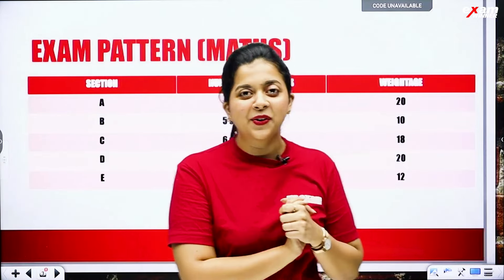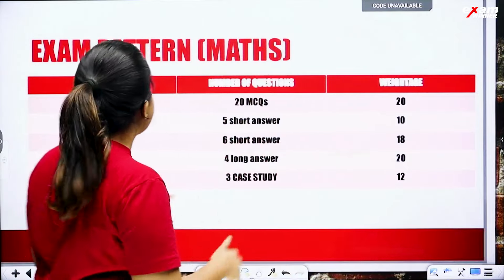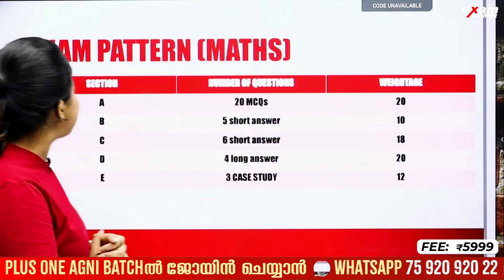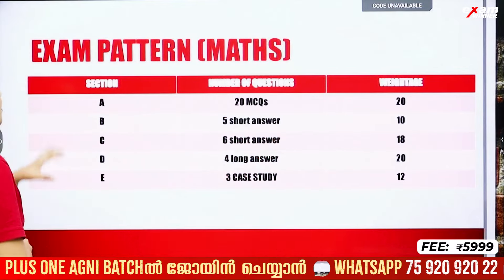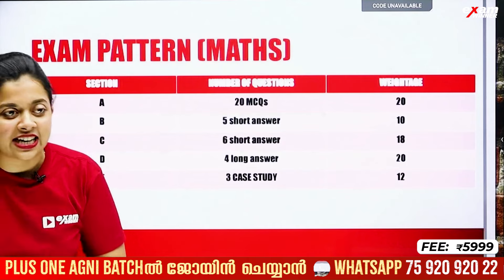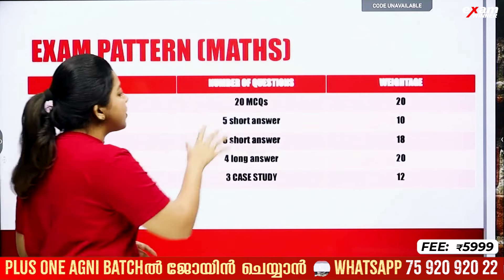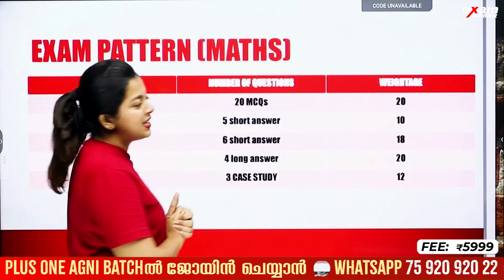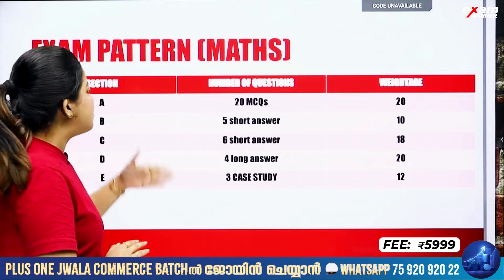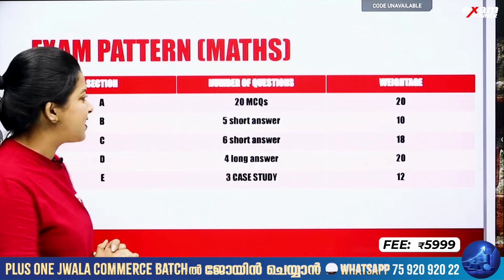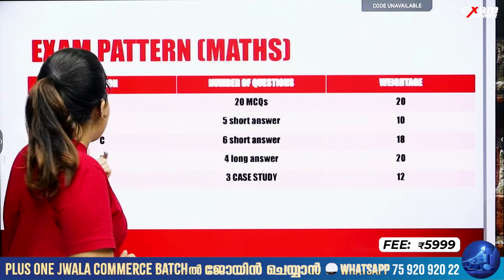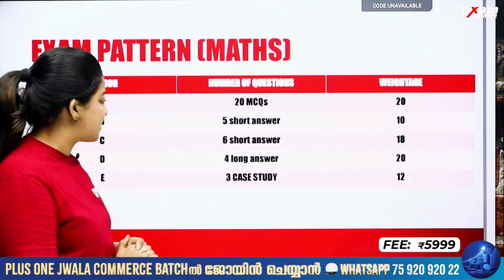Maths and Sciences Social. For Maths, we will learn about sections A, B, C, D, E. The number of questions: we will have 20 MCQs, 5 short answers, 6 short answers, and 4 long answers.